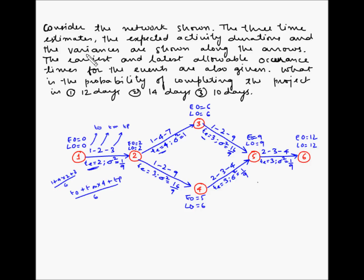We have also been given the variances, which is expressed as the square of the standard deviation. For activity 1-2 it is 1/9; for 2-3 it is 1; for 3-5 it is 16/9, and so on. The earliest and latest allowable occurrence times for the events have also been given. For event 3, the earliest occurrence time is 6 and the latest is also 6 days. For event 4, the earliest occurrence time is 5 days and the latest is 6 days.